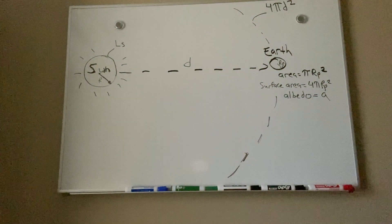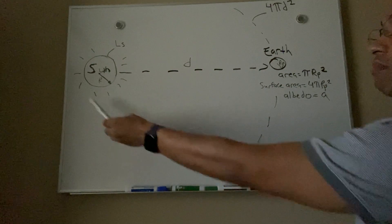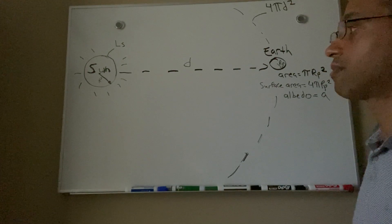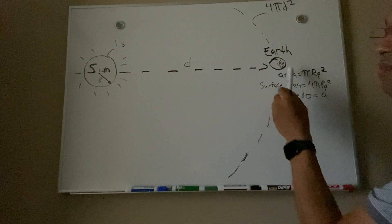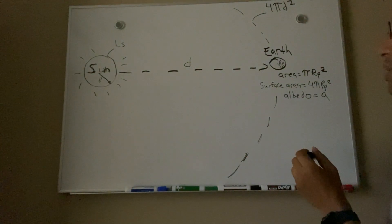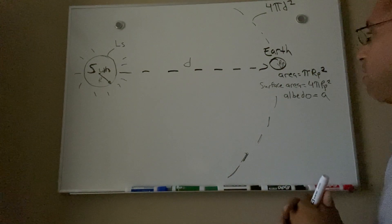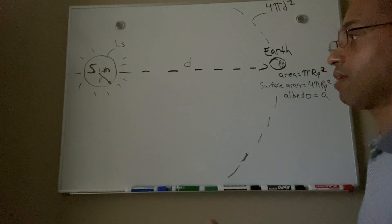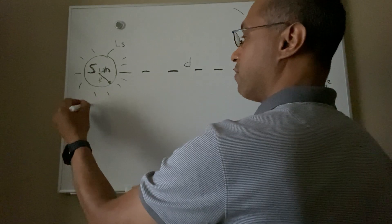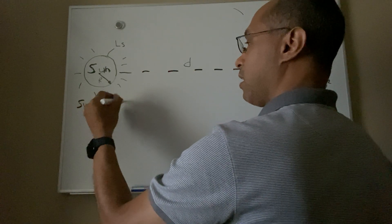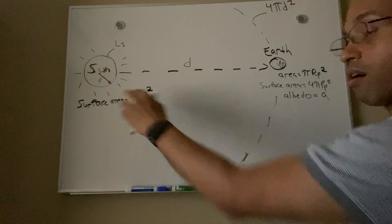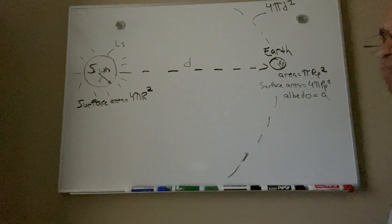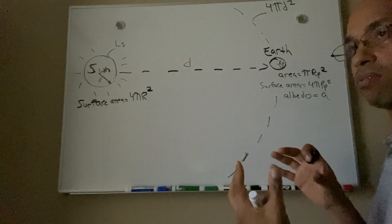Looking at this diagram on the board, here is the sun with radius r, luminosity L_s, and then a distance d to the Earth, which has a radius r_p. The two-dimensional cross-sectional area is π·r_p², and the surface area is 4π·r_p². Similarly, the surface area of the sun is 4π·r² where r is the sun's radius and r_p is the radius of the Earth.